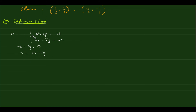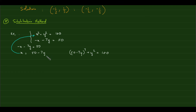From the linear equation, solve for x in terms of y: x = 50 – 7y. Now substitute this expression into the nonlinear equation. The first equation becomes (50 – 7y)² + y² = 100. Expanding: 2500 – 700y + 49y² + y² = 100.